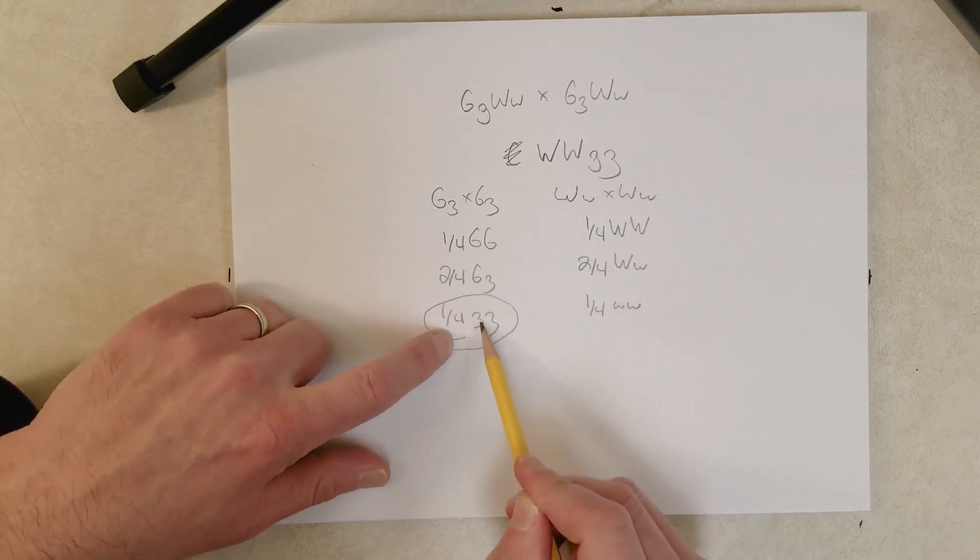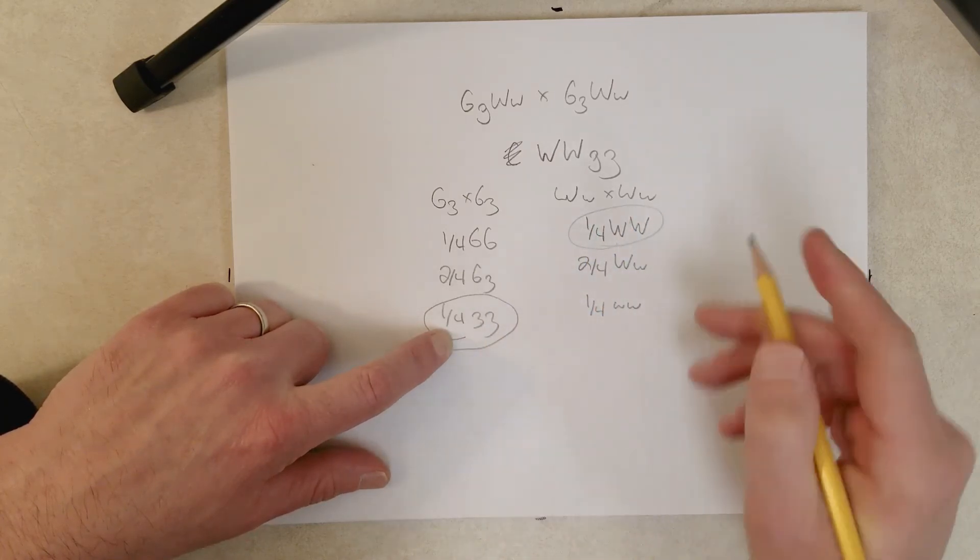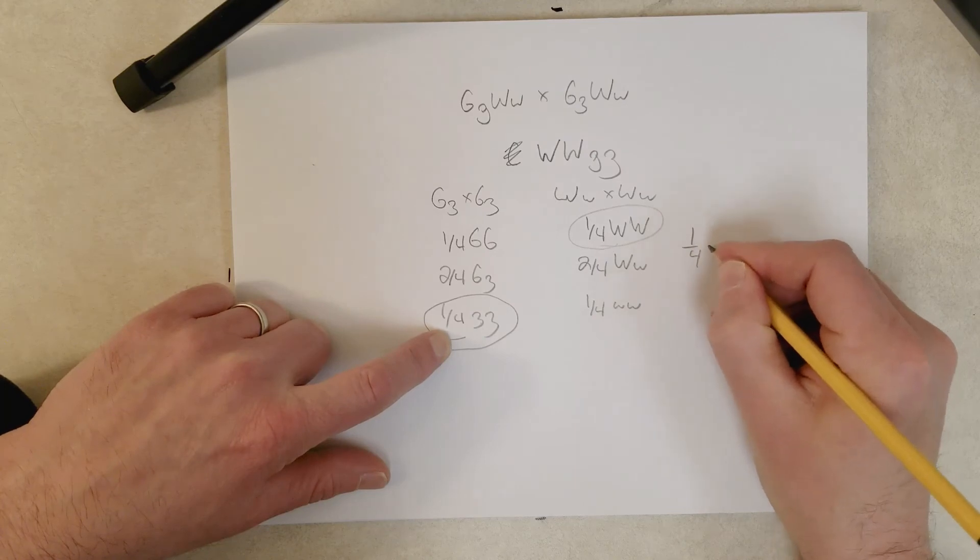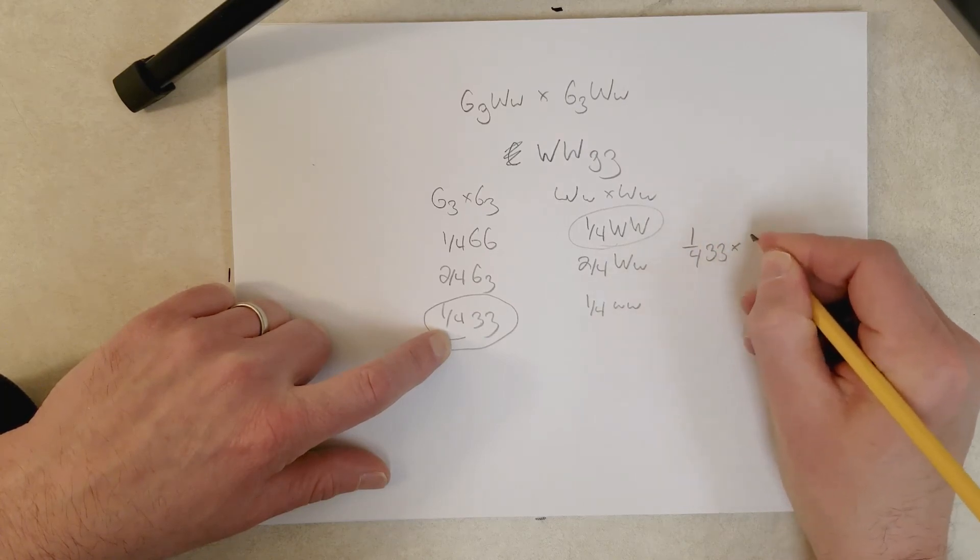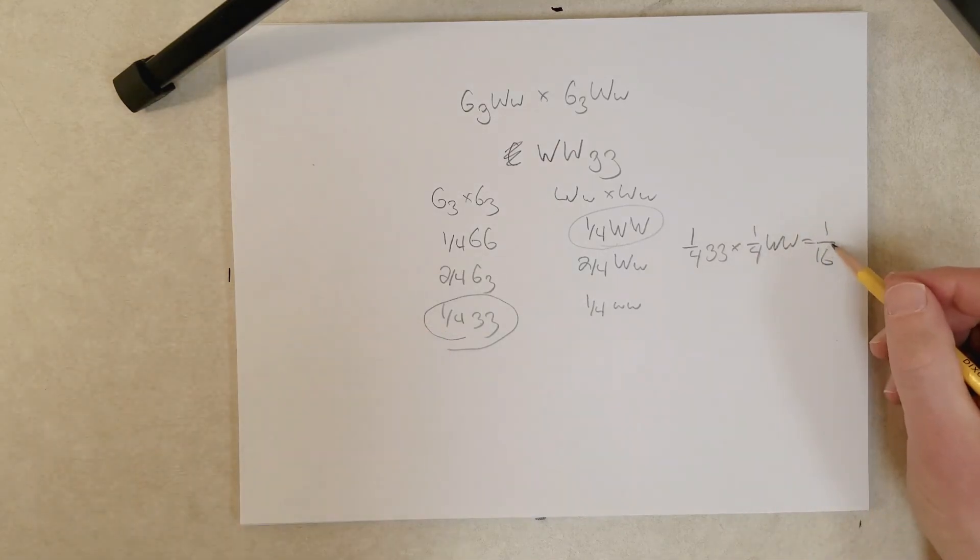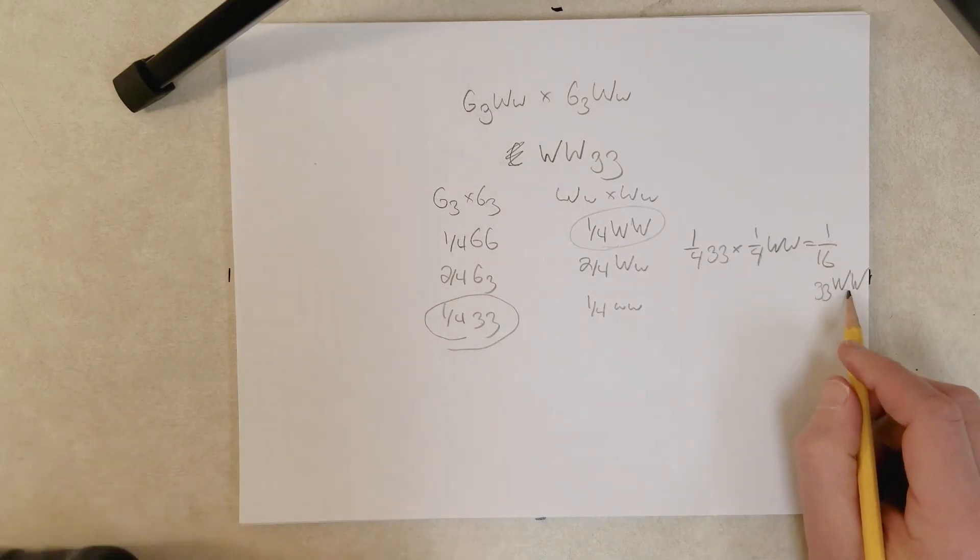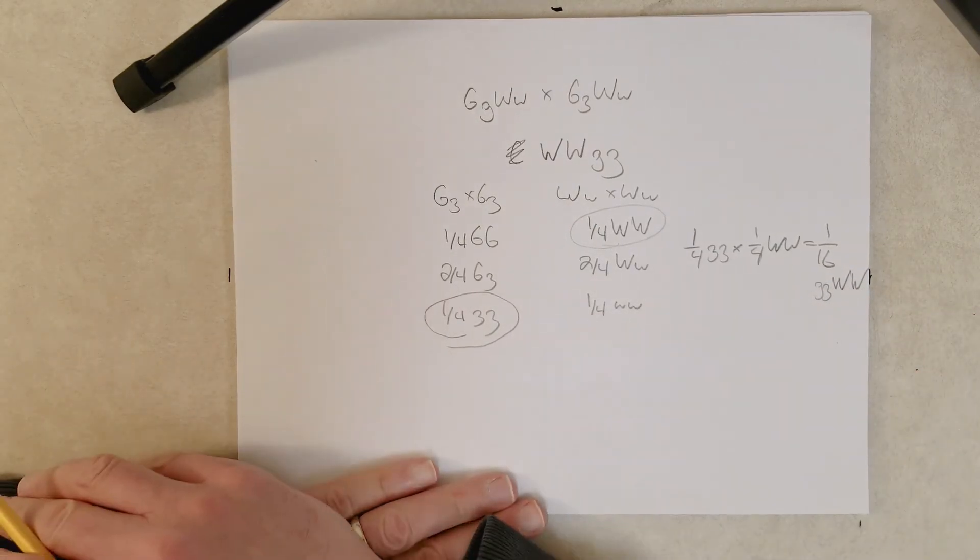Focus in on the genotypes you're interested in. So, we want offspring that have these two little g's and offspring that have these two big W's. Multiply those together, and you get the fraction of offspring which have two little g's and two big W's for a genotype.